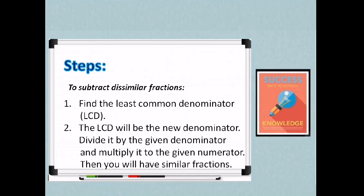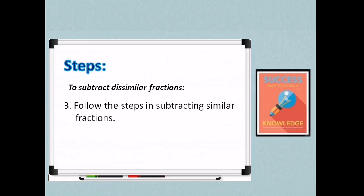Second, the LCD will be the new denominator. Divide it by the given denominator and multiply it to the given numerator. Then, you will have similar fractions. So we will be changing first dissimilar into similar then we need to follow the steps in subtracting similar fractions. So don't worry, I will be giving you examples na isusundan natin yung mga step-by-step process ng subtracting dissimilar fractions.